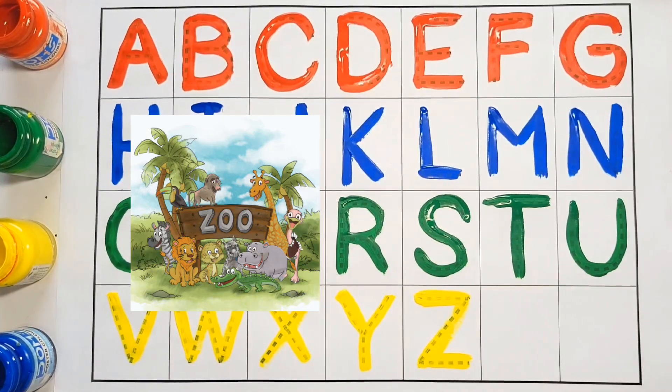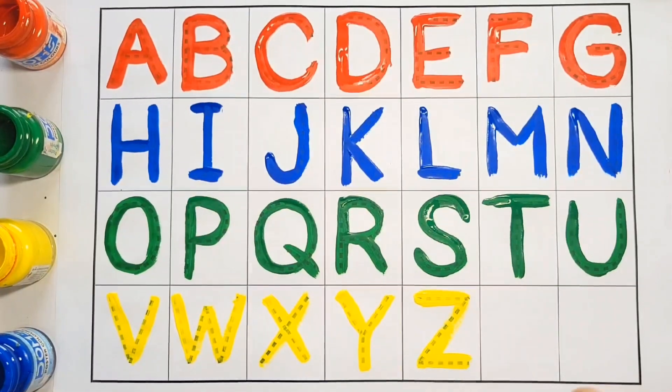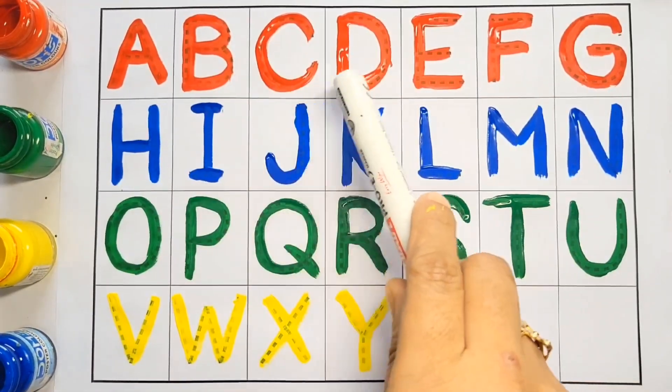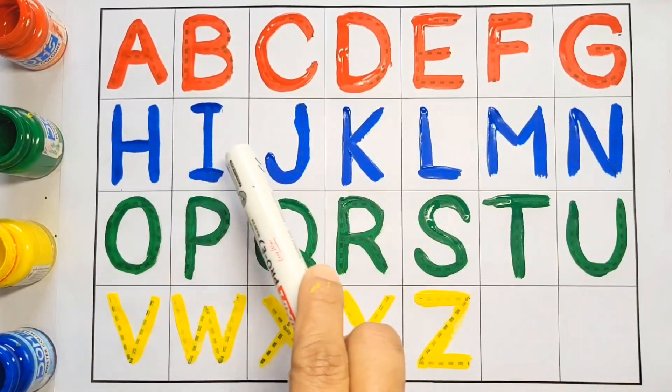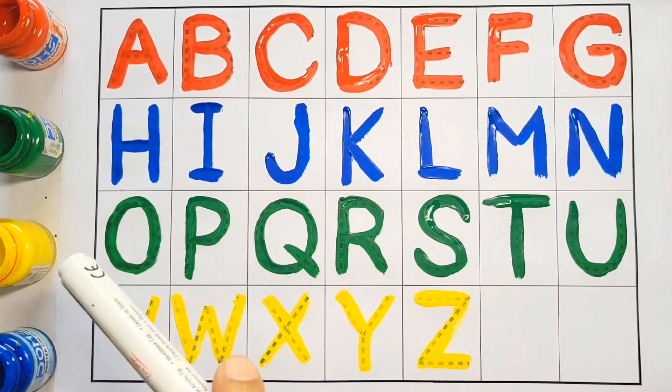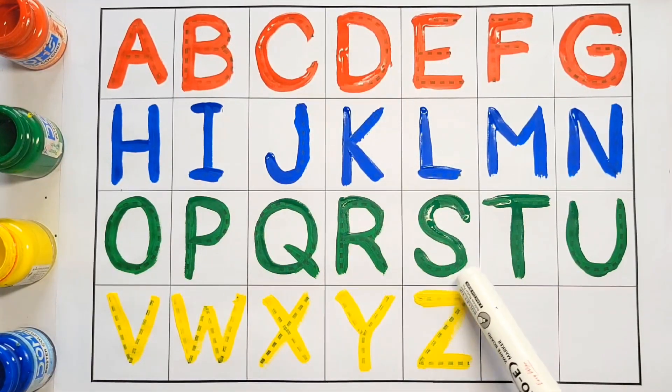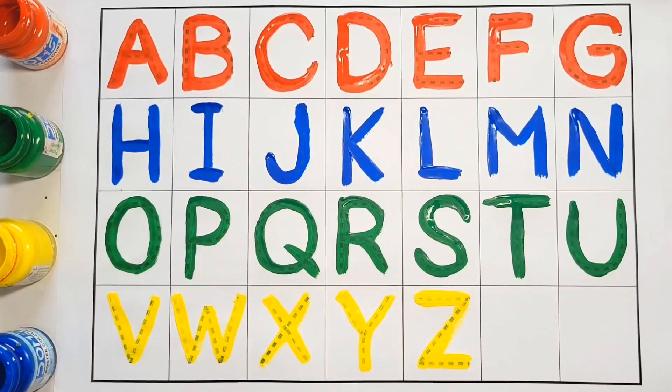Kids, let's learn alphabet A to Z alphabets. A, B, C, D, A, B, C, D, E, F, G, red color. H, I, J, K, L, M, N, blue color. O, P, Q, R, S, T, U, green color. V, W, X, Y, and Z, yellow color.